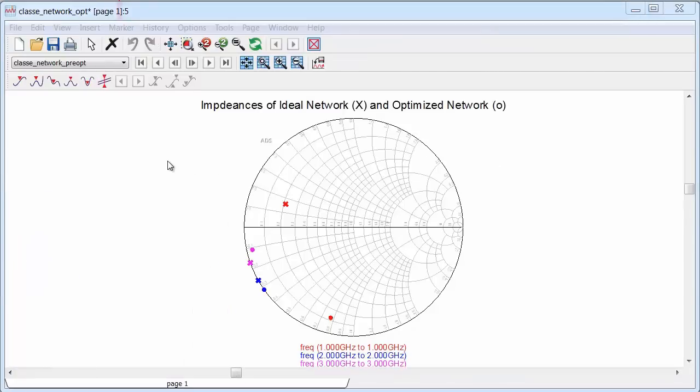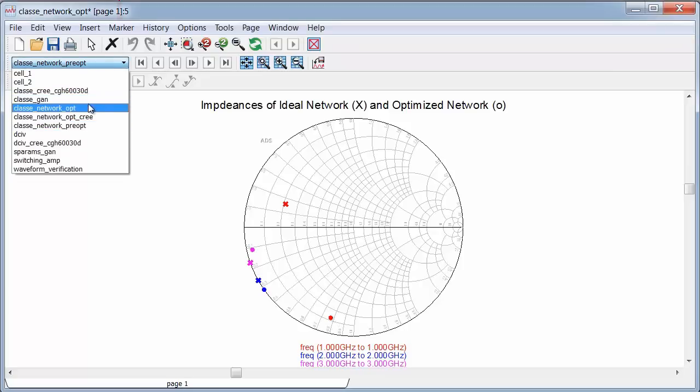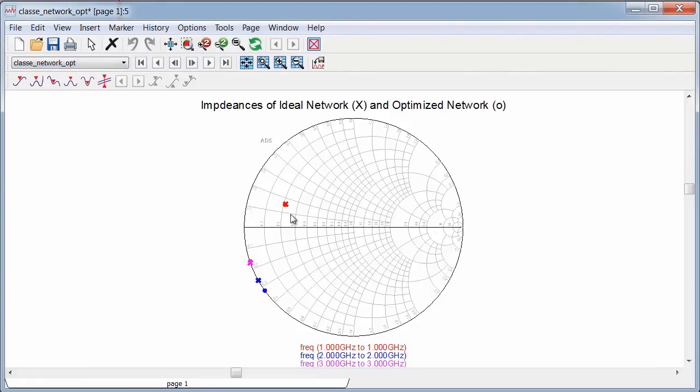So the optimizer adjusts the circuit values to try to give me those impedances for the first three harmonics. And here's my initial simulation before optimization. The targets are marked with X's, and of course the impedances are off. And here are the impedances after optimization. So you can see they're pretty close to the targets, but they're not perfect.